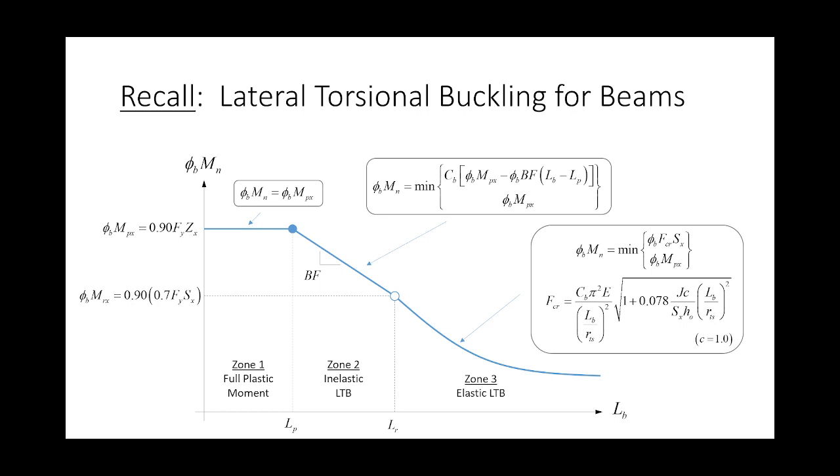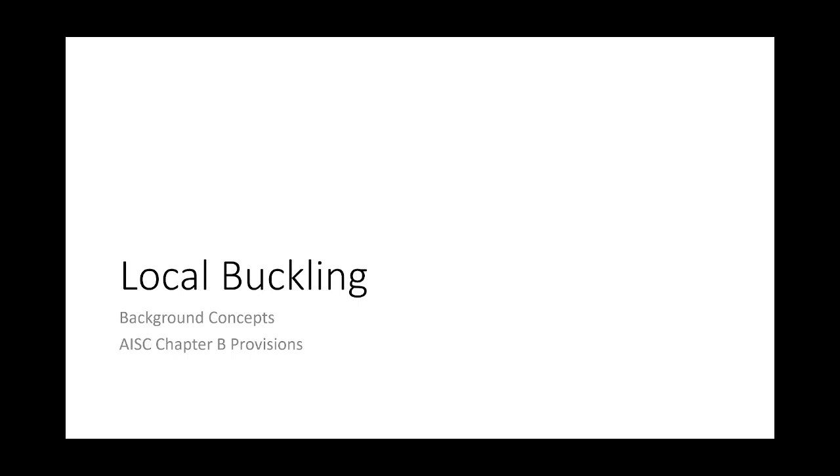But these expressions are making a generic assumption that we want to break down today. What those two curves are assuming is that local buckling is not a concern. What those two models are assuming is that local buckling is not a concern. The obvious question is: what the heck is local buckling? Well, let's talk about local buckling. The easiest way to describe it is with a picture.